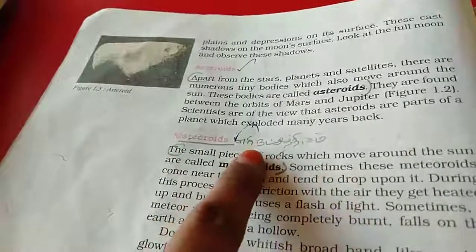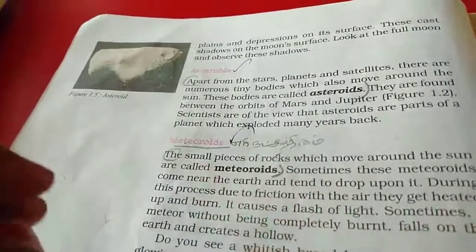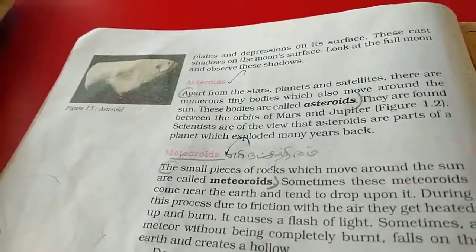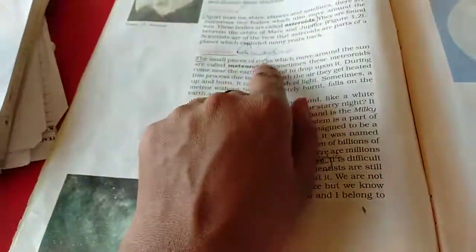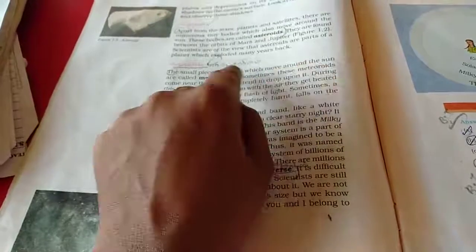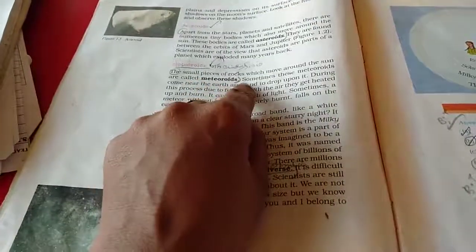Next, about meteorites. Meteorites means Arinachitram. Once upon a time only, it will come. It has some time to come. The small pieces of rocks which move around the sun are called meteoroids.